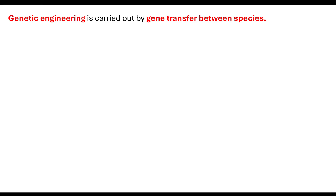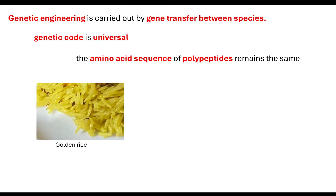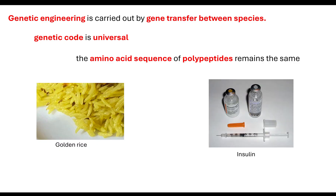So what is genetic engineering? Genetic engineering is carried out by a gene that's going to be transferred from one species to another species. What's important to understand is that the genetic code is universal, and therefore the amino acid sequence of a polypeptide is going to remain the same. Because of that, we can move one gene into another organism, which will result in the transcription and translation of that gene. We've done that with producing, for example, golden rice and also with the example of insulin for people who are diabetic.